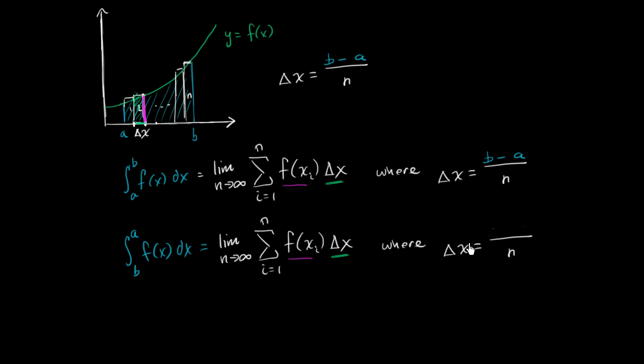So this value right over here—let me make these color-coded. This orange delta x is going to be the negative of this green delta x. This is the negative of that right over there.